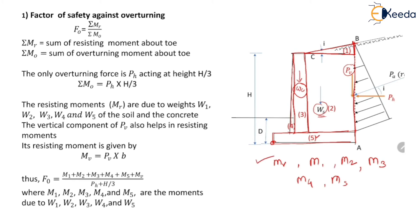These are the resisting moments. FO equals the sum of resisting moments: FO = (M1 + M2 + M3 + M4 + M5 + MV) / (PH × H/3). Here M1, M2, M3, M4, and M5 are the moments due to the weights W1, W2, W3, W4, and W5 in regions 1, 2, 3, 4, and 5 respectively.